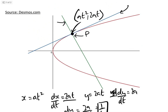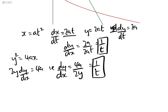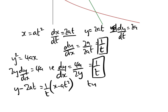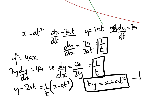We know the coordinates are (at², 2at), so the equation of the tangent is y − 2at = (1/t)(x − at²), which simplifies to ty = x + at². That is the equation of the tangent.